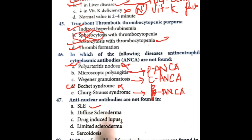Anti-nuclear antibodies (ANA) are found in SLE, drug-induced lupus, and diffuse scleroderma. You will also see ANA in limited scleroderma. However, in sarcoidosis you will not see any anti-nuclear antibody — ANA are completely absent in sarcoidosis.